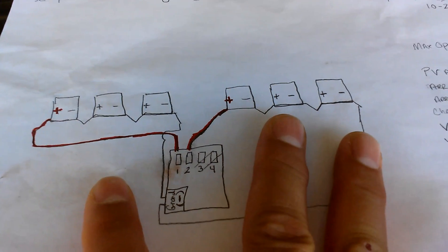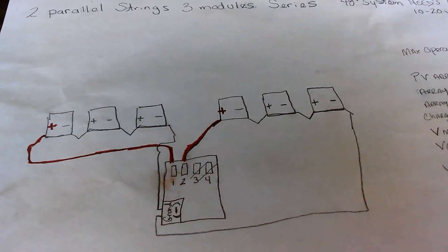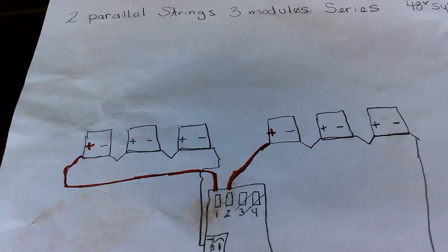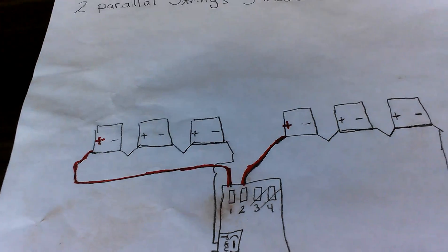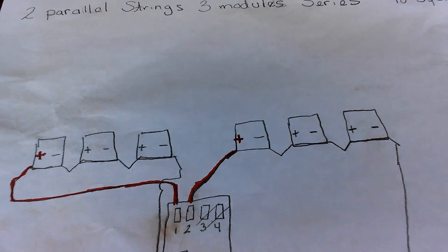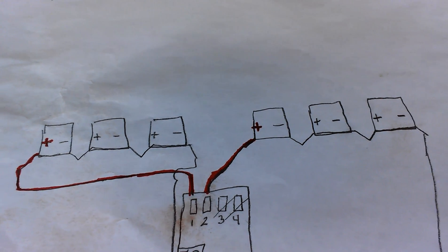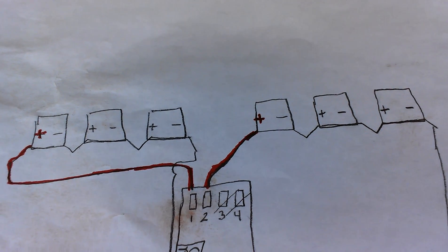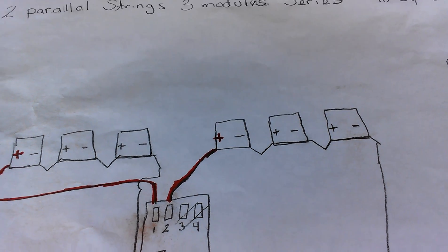Right now my voltage for just these is 156 volts, and then we're going to double that to another six panels which will bring me to 312 volts. Let me show you the combiner box.